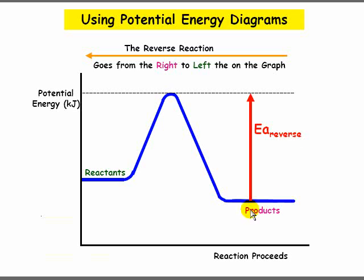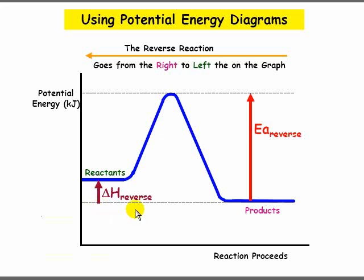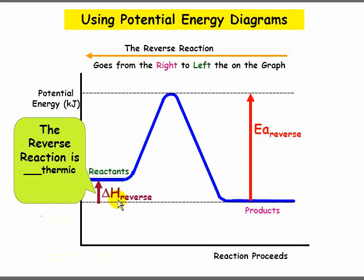The delta H for the reverse reaction is the net difference between the products and the reactants. This time, the enthalpy is going up, so delta H is positive for the reverse reaction. The reverse reaction is endothermic because, as we said, the delta H is positive.